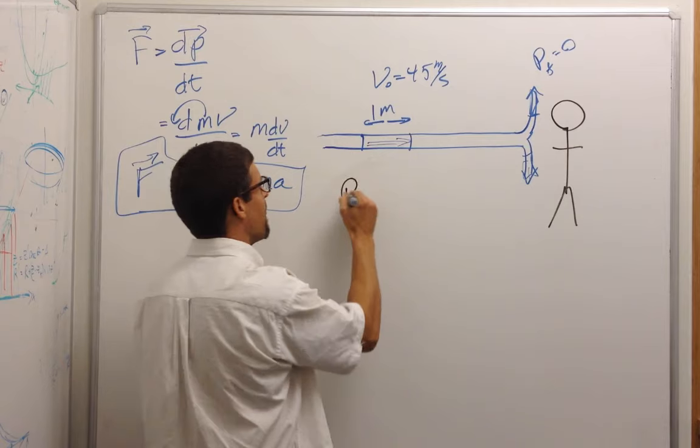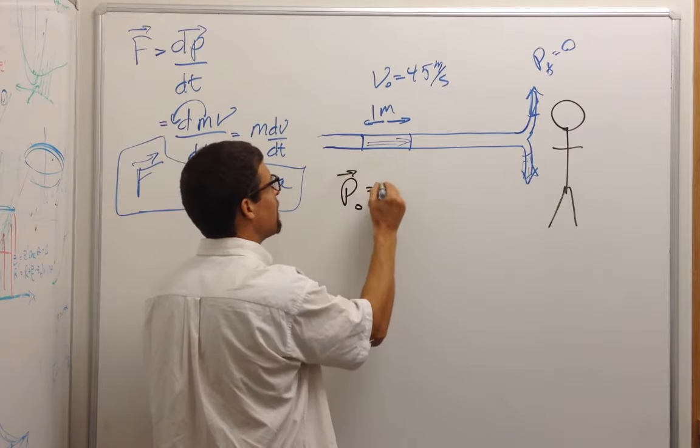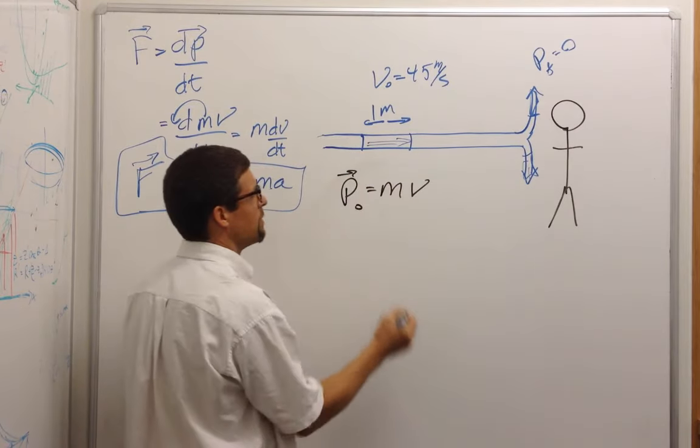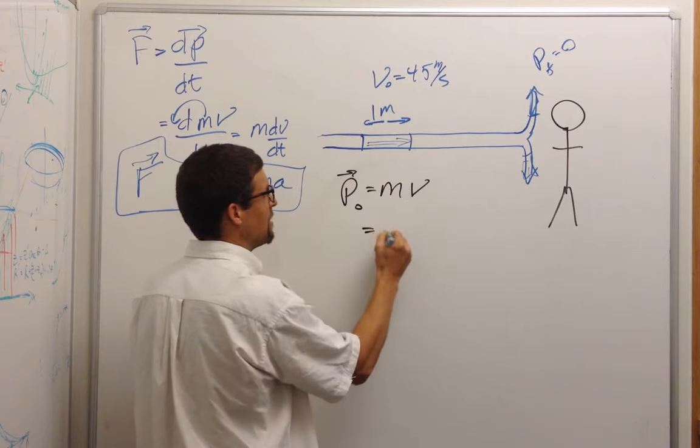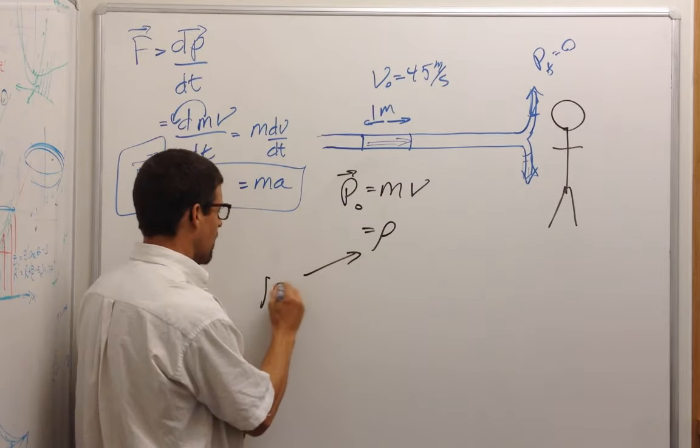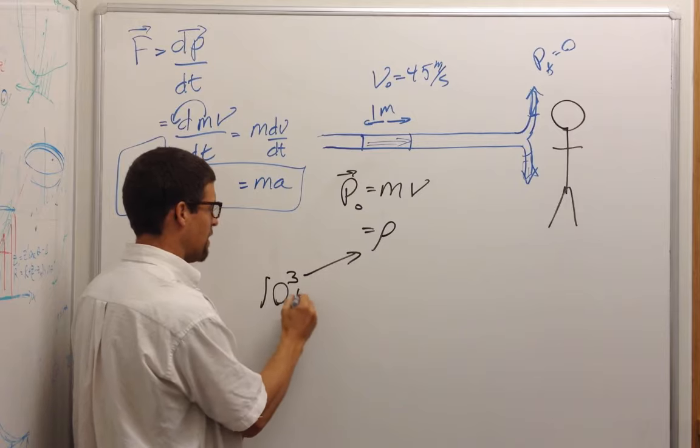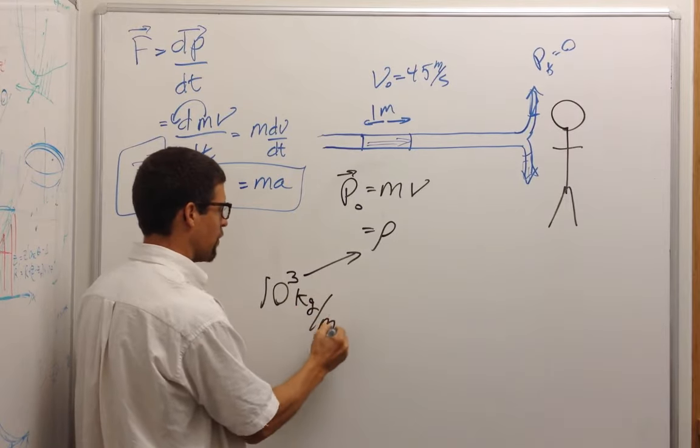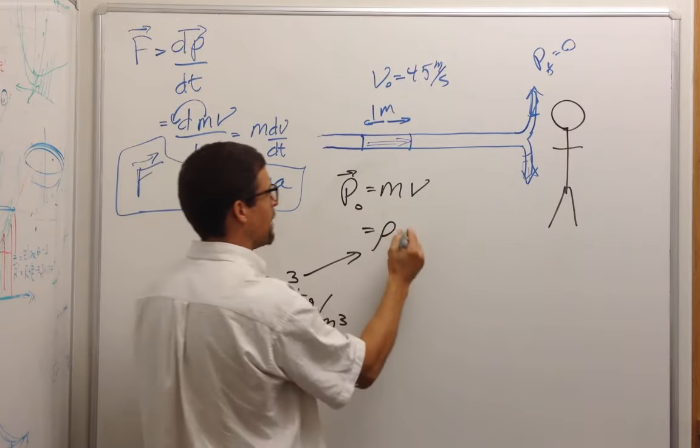We know that the momentum here, the initial momentum, is equal to mass times velocity. And the mass is equal to the density of water, which I know is a ton, 10 to the 3 kilograms per meter cubed, times the volume.